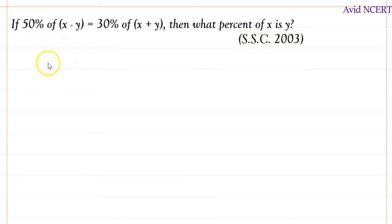So here it is: 50% is 50 by 100 times x minus y equals same thing, 30% is 30 by 100 times x plus y.